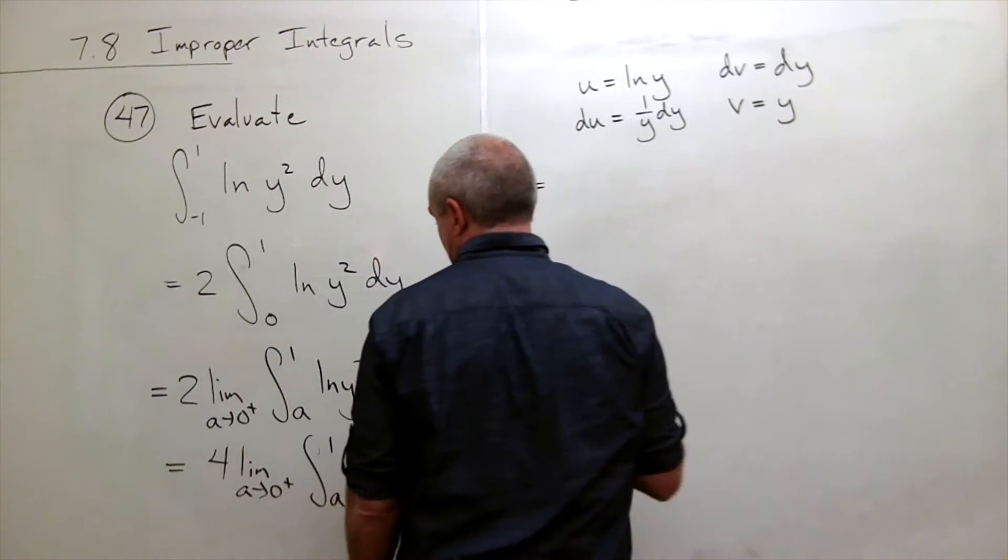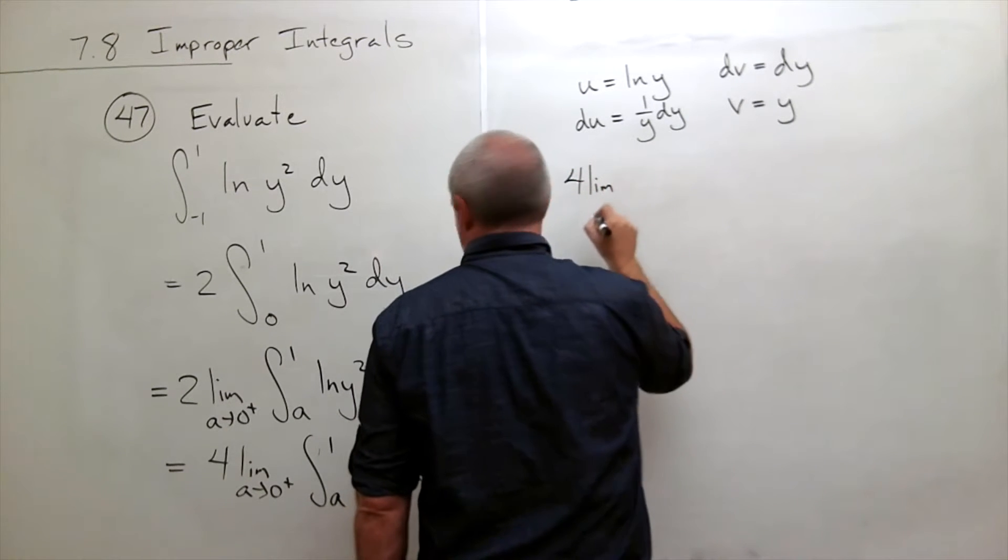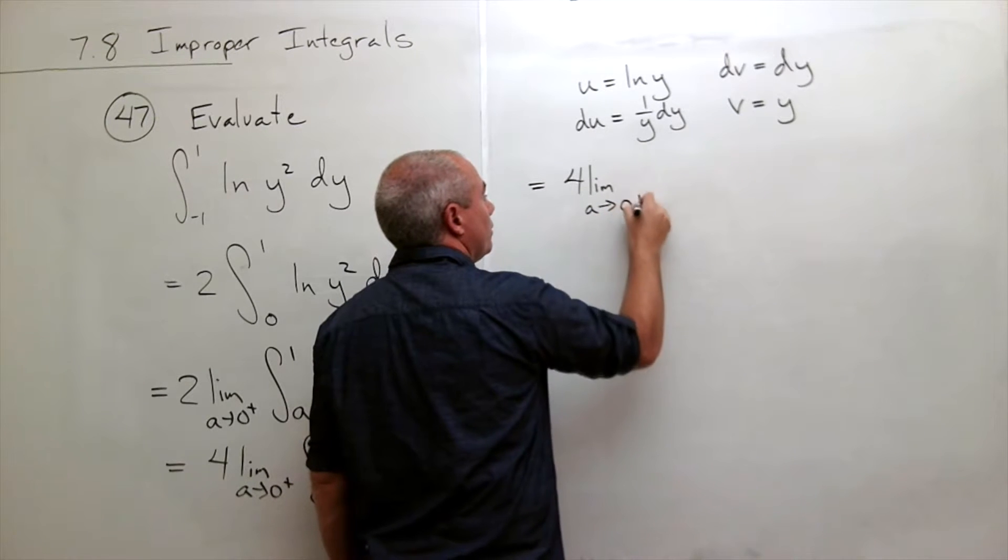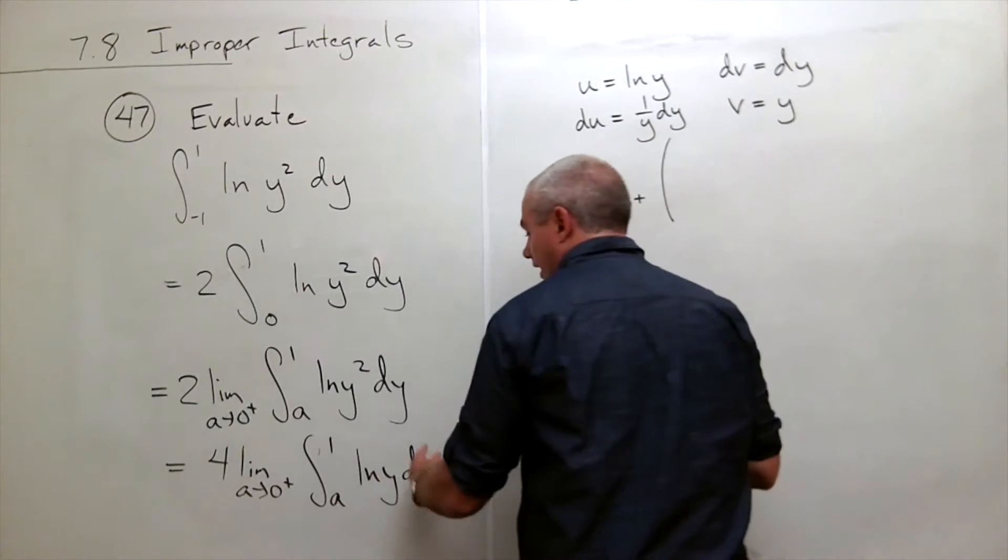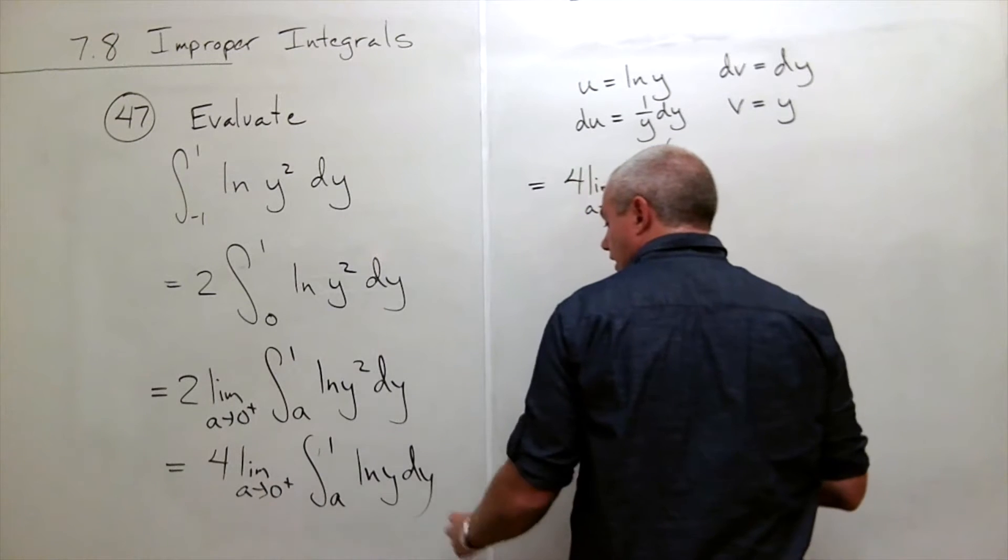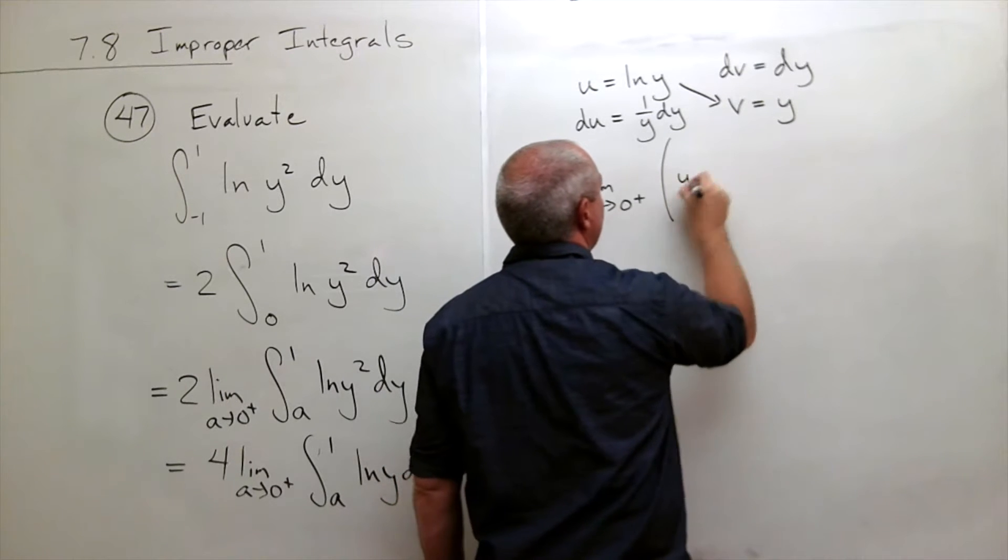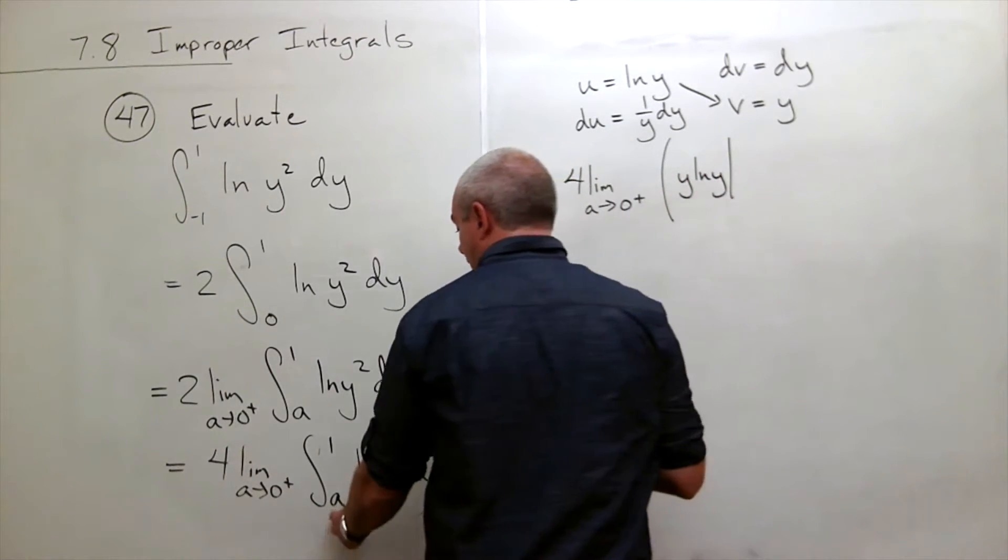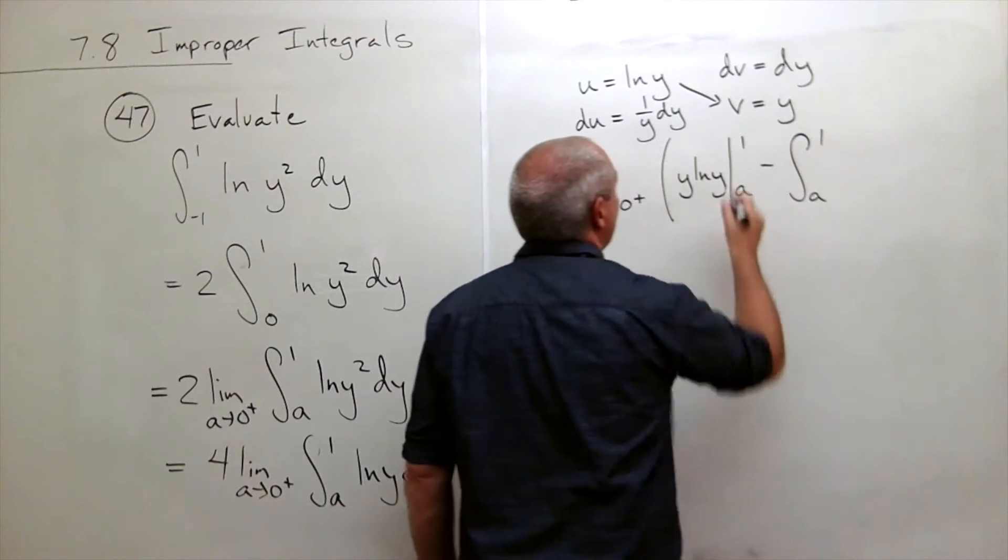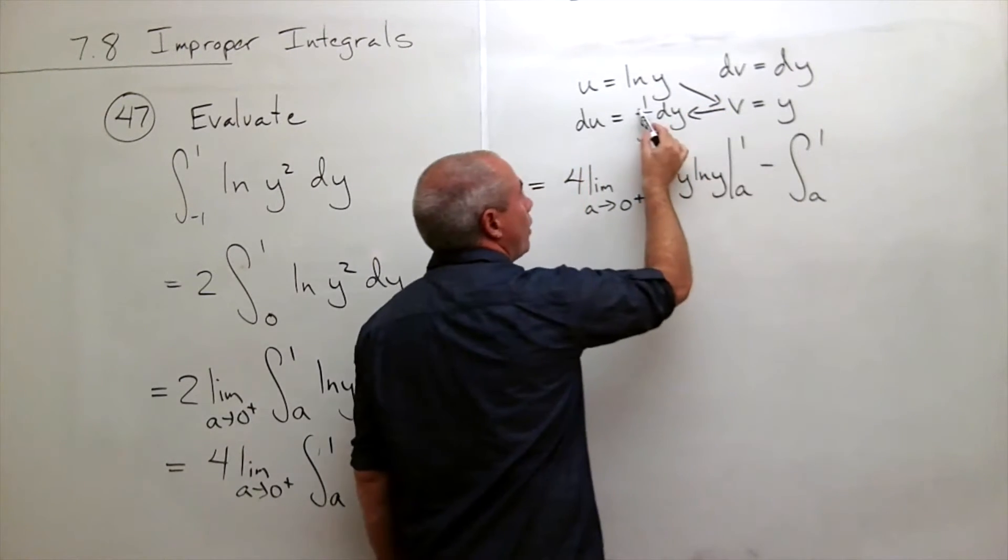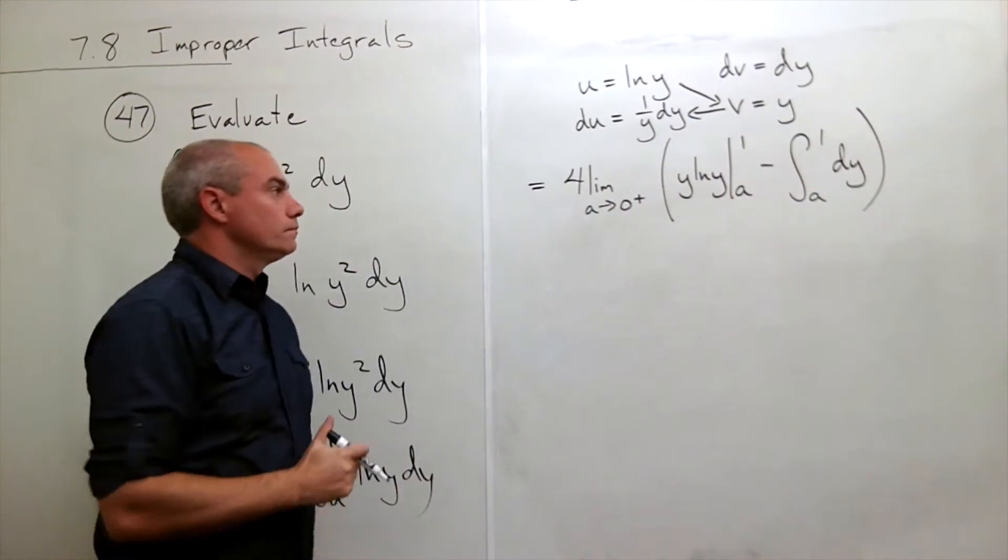Let's rewrite this thing using integration by parts. I still have this 4 times the limit as a goes to 0 from the right of, now I'm going to put a big parenthesis because I'm replacing this integral with its integration by parts form. So I get u times v, so y ln y evaluated from a to 1 minus the integral from a to 1 of v du. Well, y times 1 over y is 1 so I'm just left with dy.